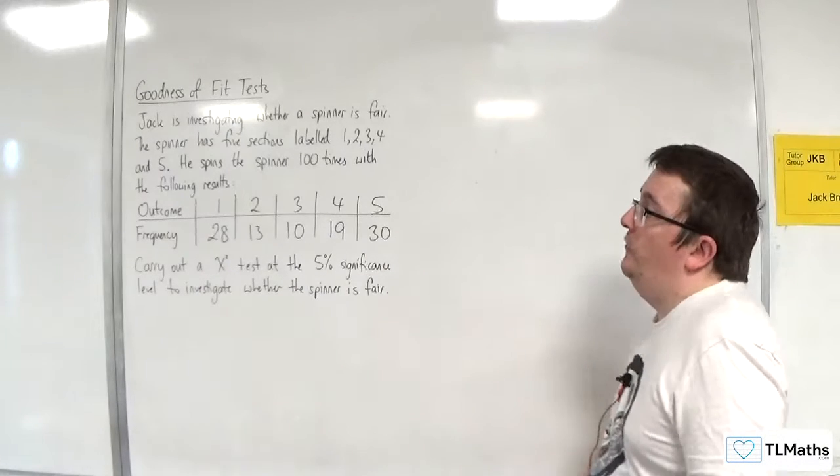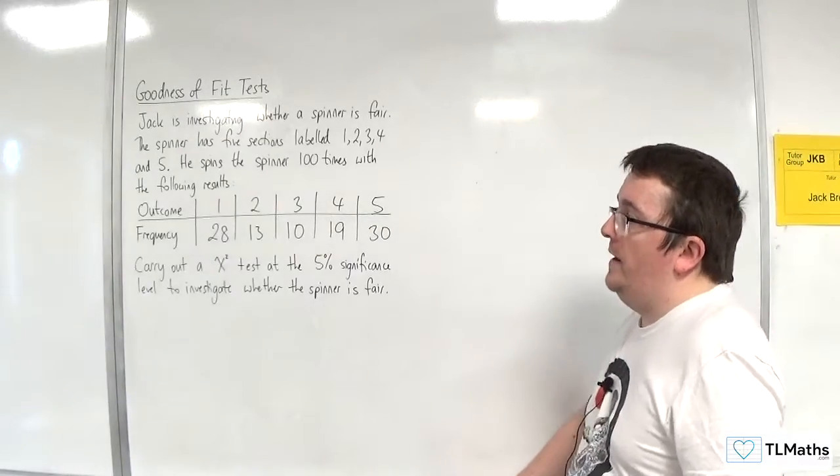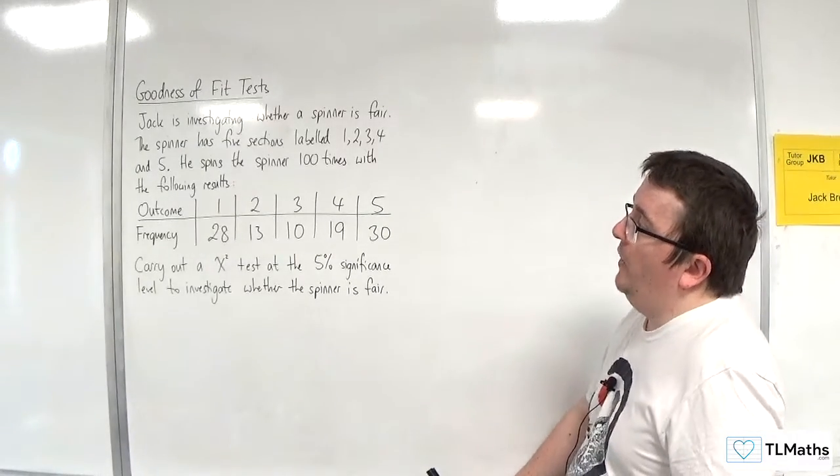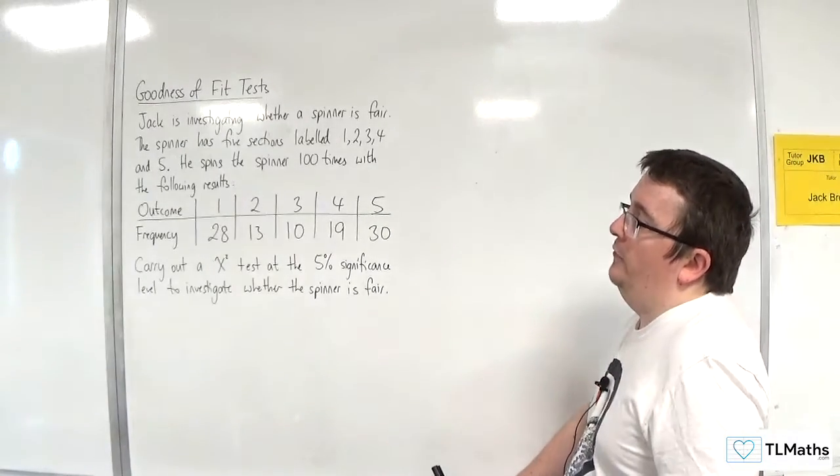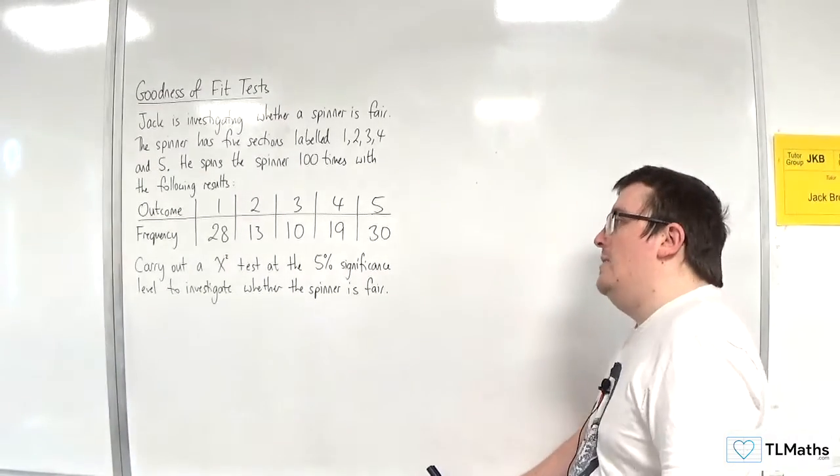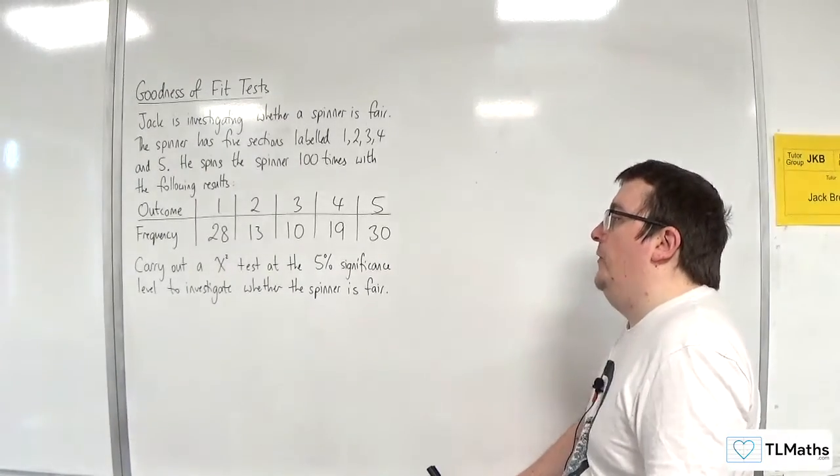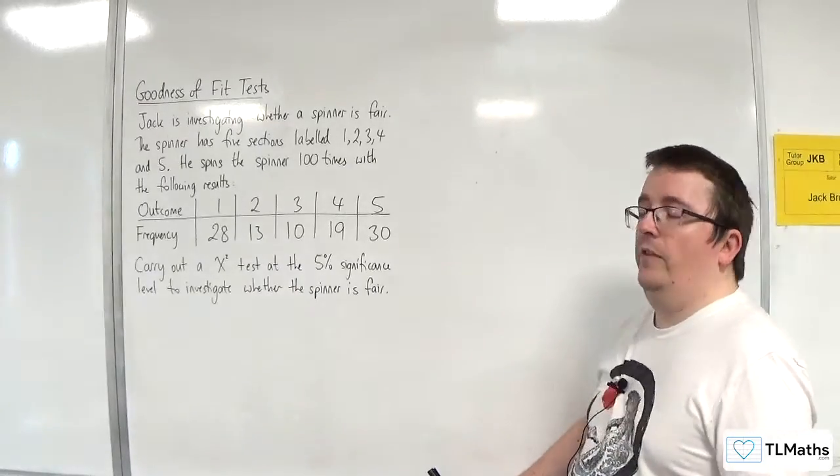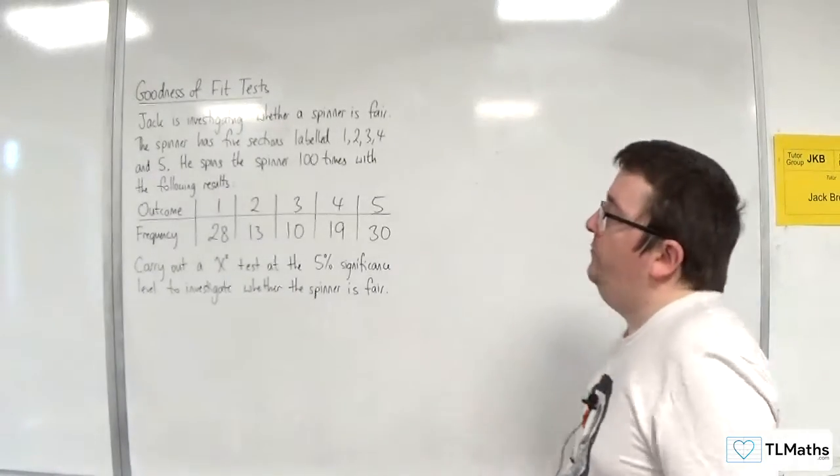In this video, Jack is investigating whether a spinner is fair. The spinner has five sections labelled 1, 2, 3, 4, and 5. He spins the spinner 100 times with the following results. Carry out a chi-squared test at the 5% significance level to investigate whether the spinner is fair.